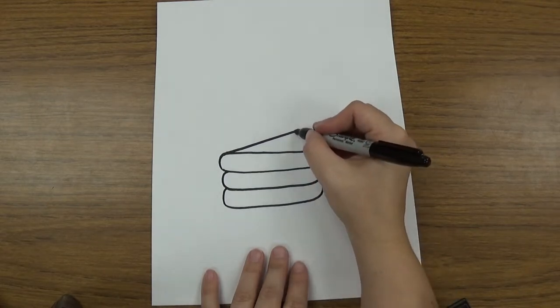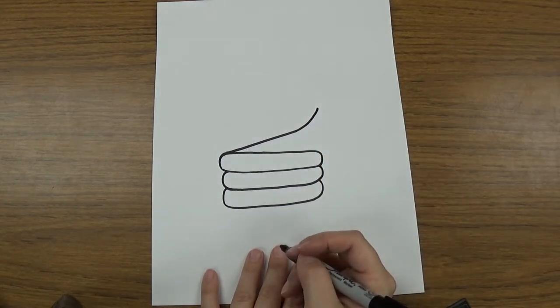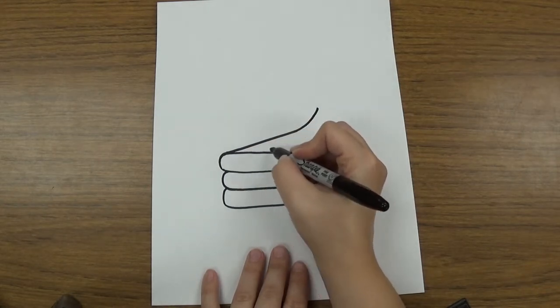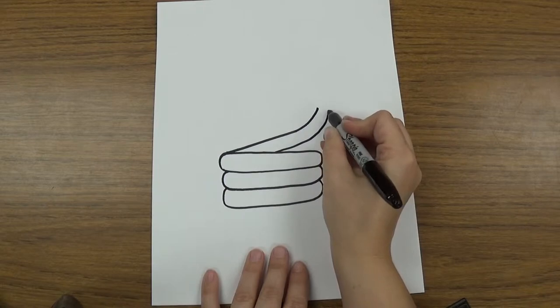And then you're gonna draw it so it curves just a little bit at the top. And you're gonna do the same thing but it's gonna be just a little over and make it so it curves the same way, just like that.